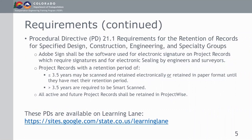The other procedural directive is known as PD21.1 and involves the retention of project records for design, construction, and engineering, and any records generated by specialty groups like right-of-way, surveying, and utilities. Within 21.1, Adobe Sign has been selected as the software used for electronic signatures on project records, which are defined essentially as any records having to do with the creation, design, or execution of the project — from design through construction.